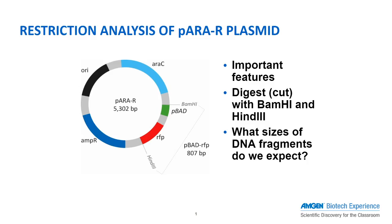During lab 2a, we are using restriction enzymes to cleave the DNA plasmids in specific locations. For this lab, we are using the P-era R plasmid that contains all the DNA components required to produce red fluorescent protein, or RFP.